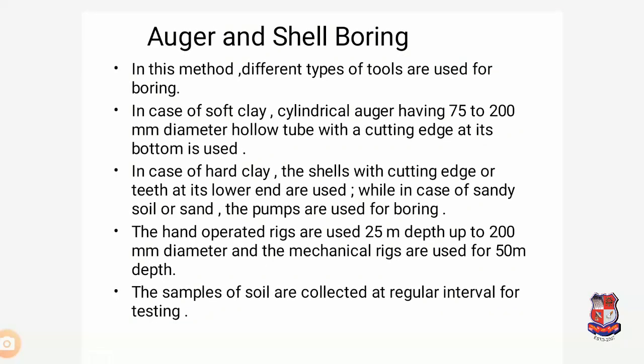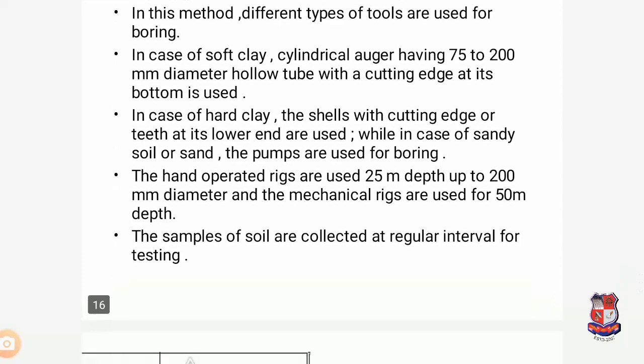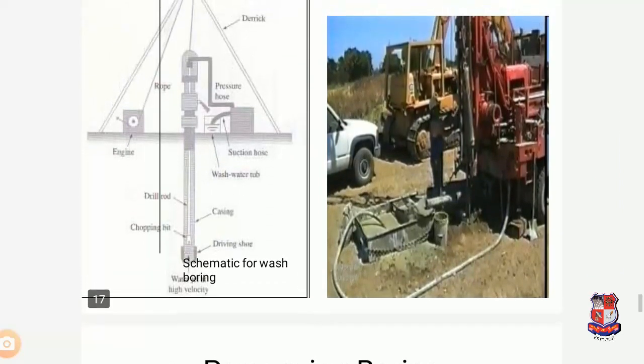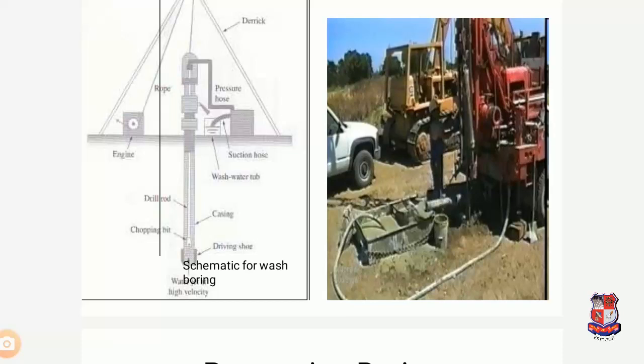In auger and shell boring, different types of tools are used. For soft clay, an auger having a 75 to 200 mm diameter hollow tube with a cutting edge is provided. For hard strata or hard clay, a shell with a cutting edge with teeth is used. In sandy soil, pumps are used — hand-operated drills of 25 mm to 200 mm diameter and mechanical rings of 50 mm. Soil samples are collected at regular intervals for testing. The wash boring setup shows boring on one side while water is passed from the other side to enable regular sampling.